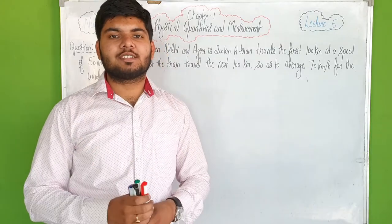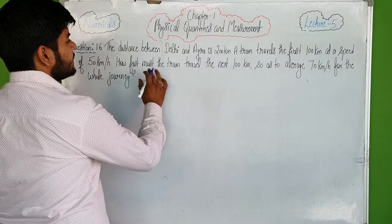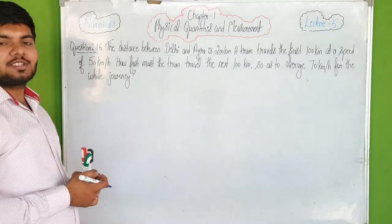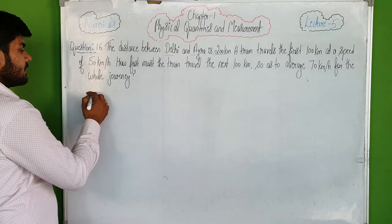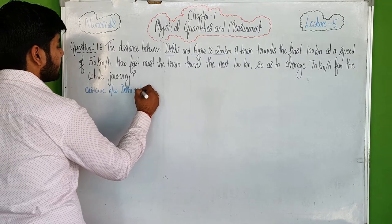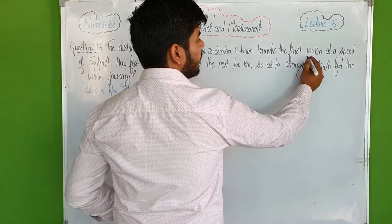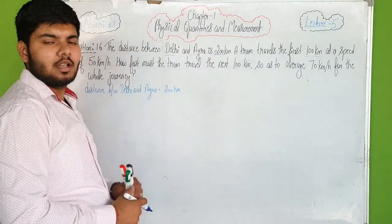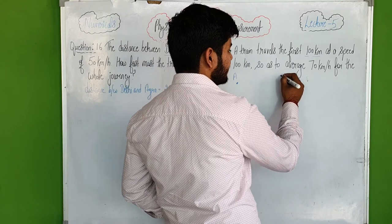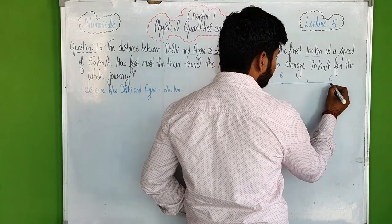So the height of Rohan's box will be 3 centimeters. If he takes that volume, that length, and that width, the box height comes out to 3 centimeters. I hope the numericals are clear. Moving on to numerical number 16.